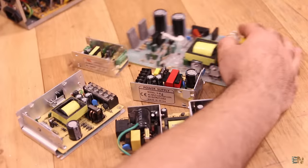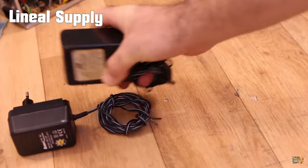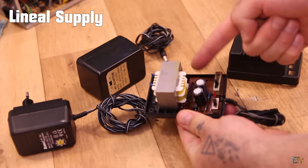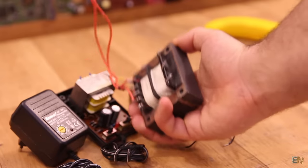The opposite type of supplies are those who are using linear regulators and transformers. These are not efficient at all and also could be very big and weigh too much.